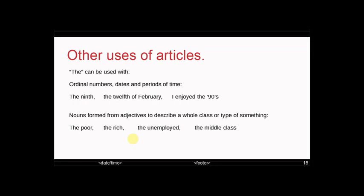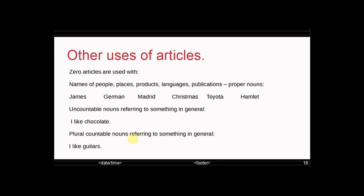Also with the, we can use ordinal numbers, dates and periods of time. So the 9th, the 12th of February, periods of time, I enjoyed the 90s or the 1990s. The also takes nouns which are formed from adjectives to describe a whole class or type of something. So we could talk about the poor, the rich, the middle class, the unemployed, these groups of people, which are nouns formed from adjectives.